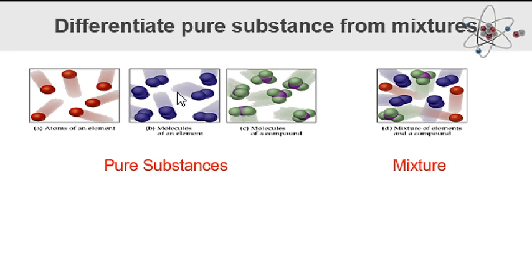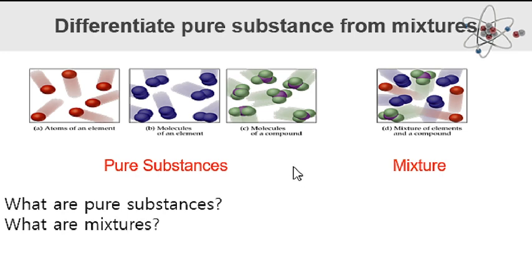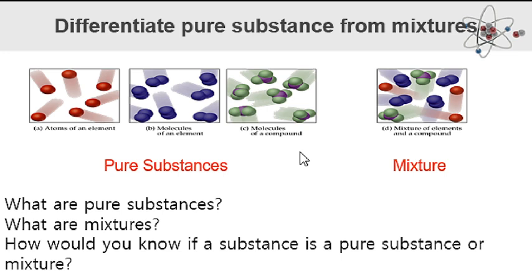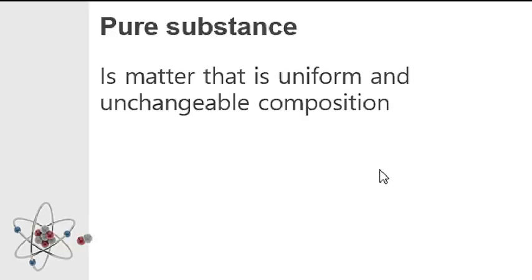So in our lesson today, what you will know or understand is what are pure substances, what are mixtures, and how would you know if a substance is a pure substance or a mixture. Again, all of these are pure substances. Because when we say substance, all matter is a substance — it can be a pure substance or a mixture. When we say pure substance, it is matter that is uniform and unchangeable in composition.